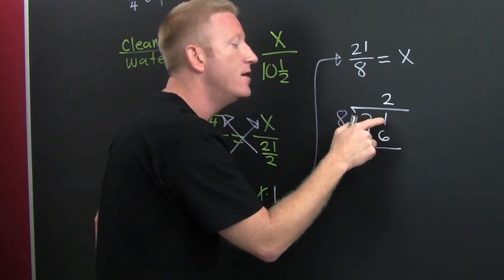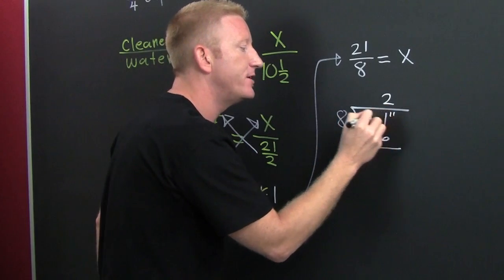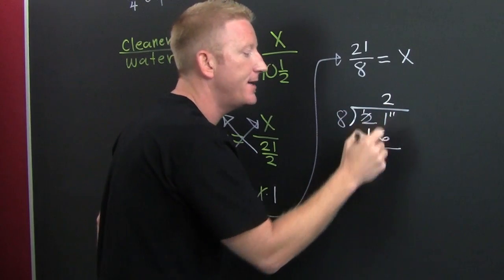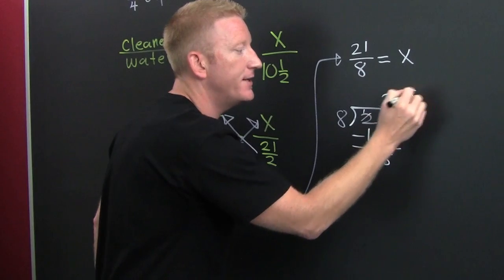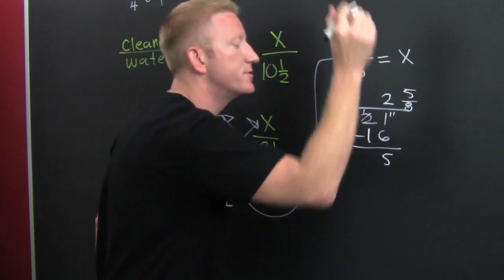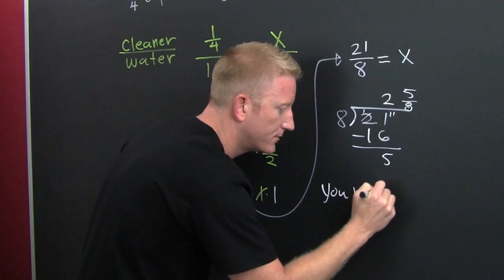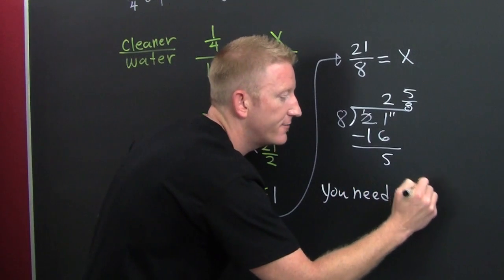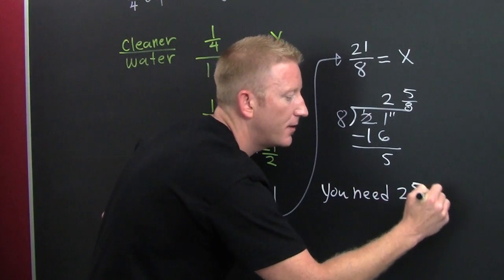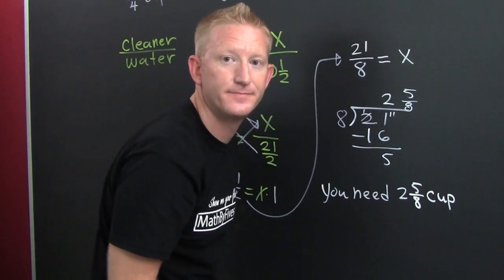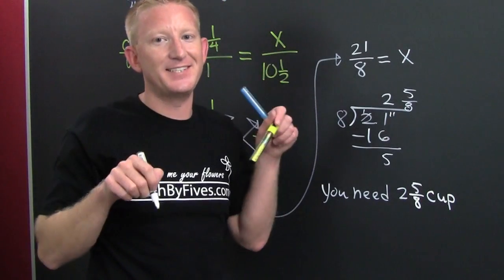Add down. Well, subtract in this case. The one's got to borrow making him an eleven. He's a one. And then that's five. So, what's that? That's two and remainder over divisor. So, you need two and five-eighths cup of cleanser. That was a clean example.